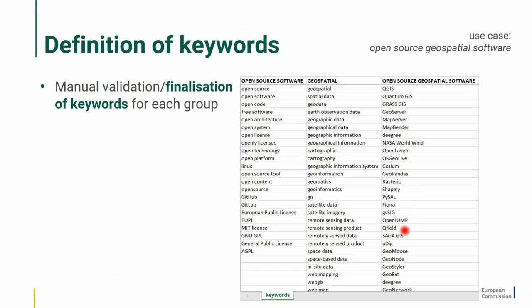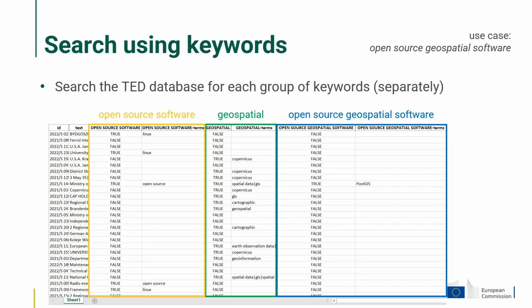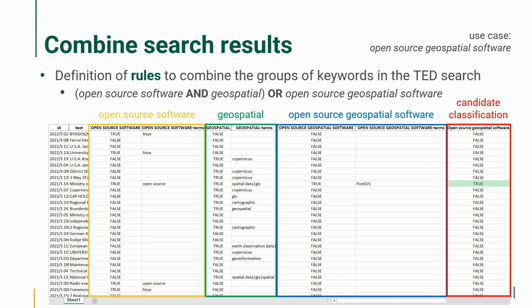Here we have a column with all the names of OSGeo software projects plus other open source geospatial projects. The idea is that we first search the database independently for all these groups of keywords — each row is a procurement with text we scan, and we identify keywords if present. Then we combine them with some rules. A procurement may be related to open source geospatial software if it includes a keyword from the open source set and from the geospatial set, or just one of the names of the software tools. If I find QGIS, I assume it's related to open source software.